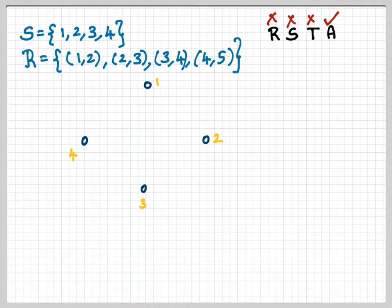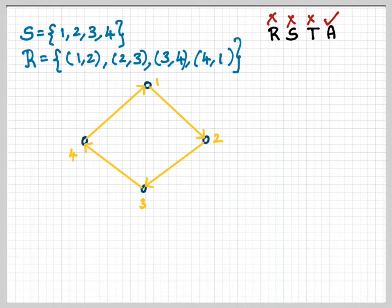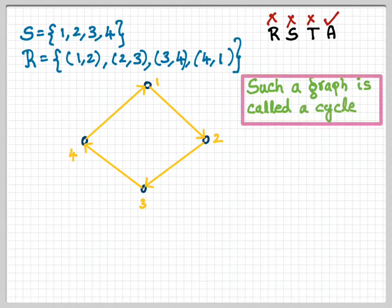Looking at the graphical representation: all four nodes with their labels, with edges from 1 to 2, 2 to 3, 3 to 4, and 4 to 1. Note there is a correction — it should be (4,1), not (4,5). This is the relation R = {(1,2), (2,3), (3,4), (4,1)} and its graphical representation. Such a graph is called a cycle.